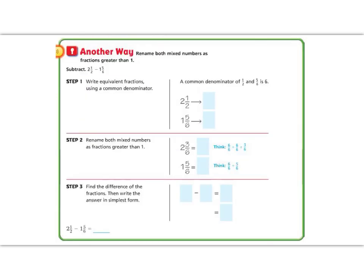Great job so far, 5th graders. We're going to try this lesson another way. This borrowing and renaming with a fraction can be kind of tricky, so another way to do it is to rename both of your mixed numbers as improper fractions and then subtract. We're going to use the same numbers: 2 and a half minus 1 and 5 sixths.